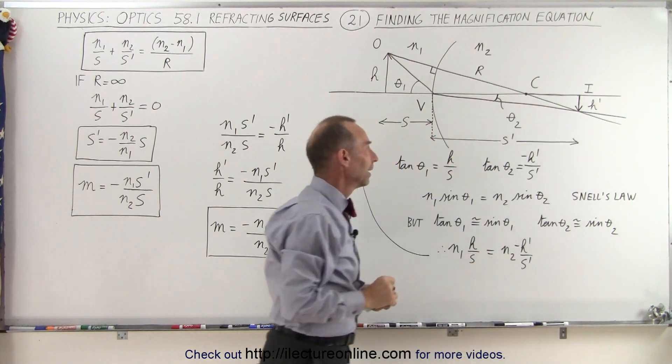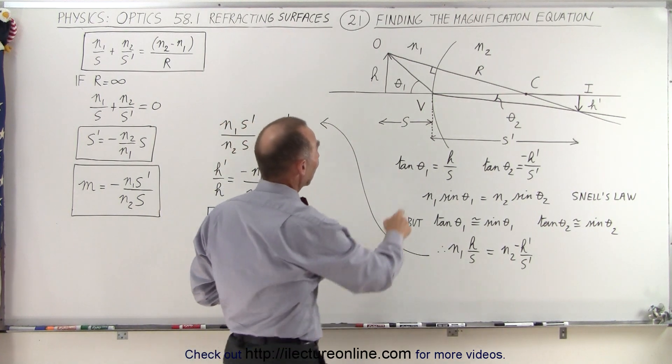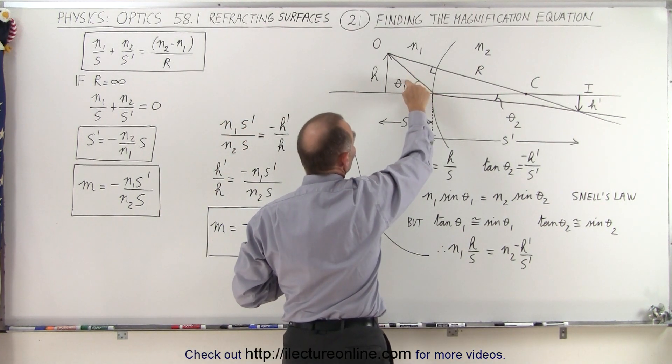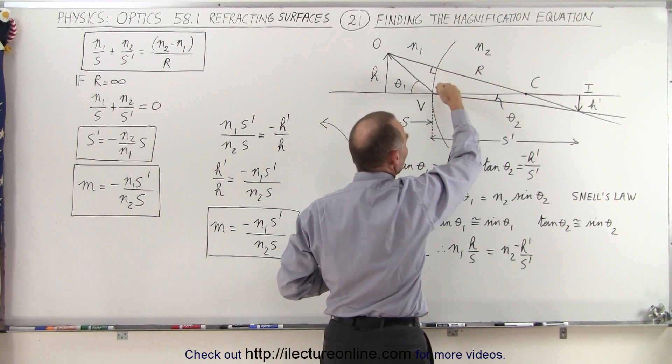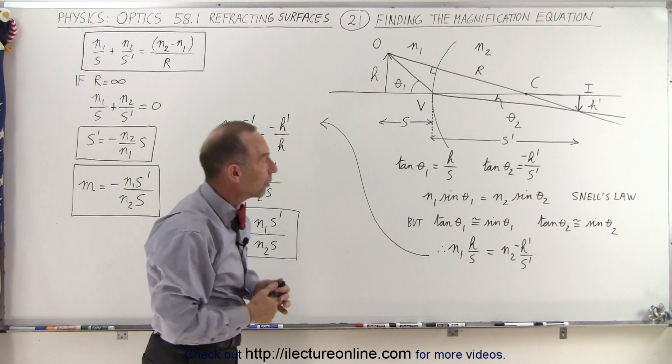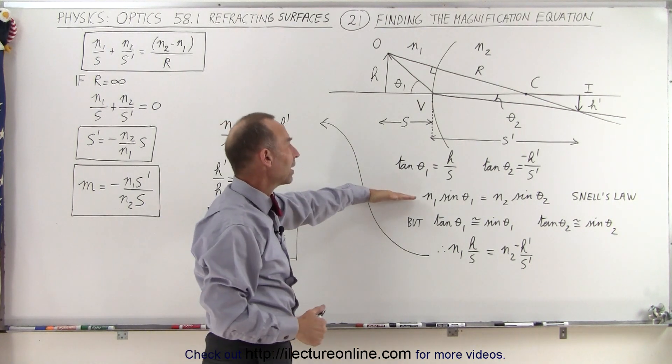And using Snell's law, we can say that N1 times the sine of theta 1 must equal N2 times the sine of theta 2, because that's what we find across any ray going across any boundary like that. And that's the equation right here.